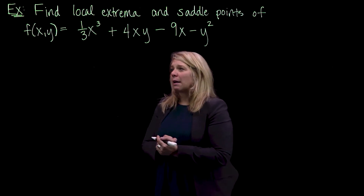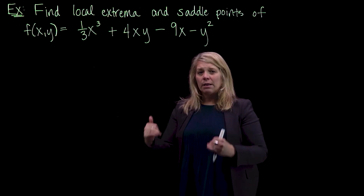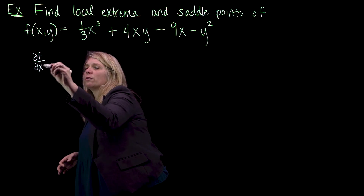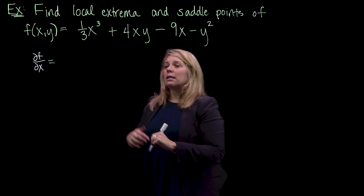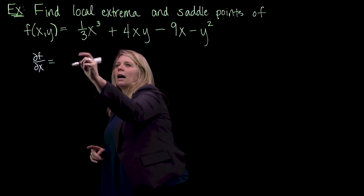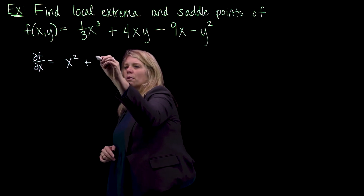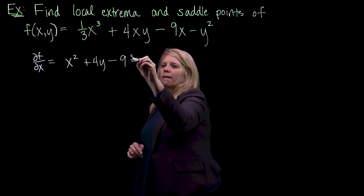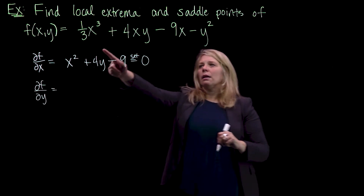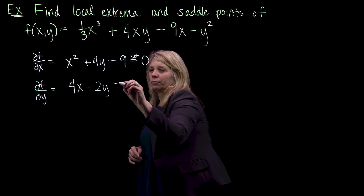I'm going to start with my partial derivatives and set each of those equal to zero. In that last video I started with a gradient vector and set the gradient vector equal to zero, but then we pulled out each component, so we're really just looking at where each partial derivative is equal to zero. So I'll have x squared, and then differentiating with respect to x, plus 4y minus 9, set that equal to zero, and my partial derivative with respect to y: 4x minus 2y, set that equal to zero.